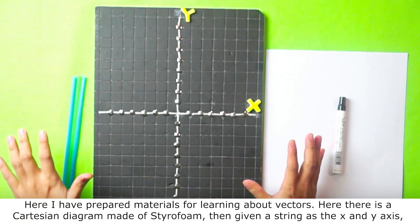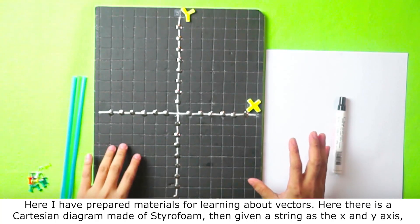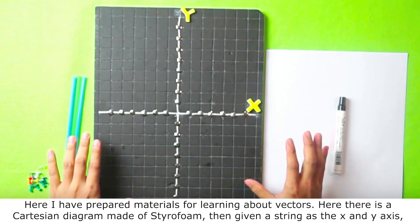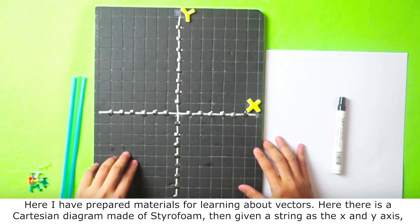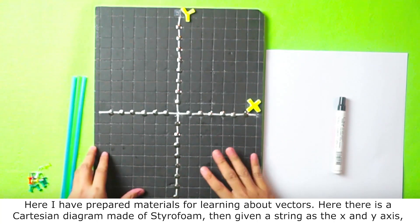Here I have prepared materials for learning about vectors. Here there is a Cartesian diagram made of styrofoam, then given a string as the x and y axis.